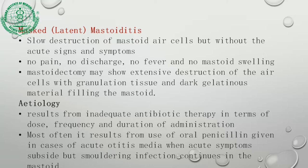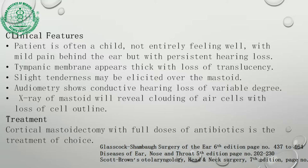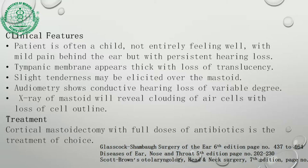Masked or latent mastoiditis is slow destruction of the mastoid cells without the acute signs and symptoms — no pain, no discharge, no fever, no mastoid swelling. Etiology: results from inadequate antibiotic therapy in terms of dose, frequency, and duration — most often from oral penicillin in acute otitis media where acute symptoms subside but infection continues. Clinical features: child not entirely well, mild pain behind the ear, some hearing loss, thickened tympanic membrane with loss of translucency, slight mastoid tenderness, and conductive hearing loss on audiometry. X-ray mastoid shows clouding. Treatment: cortical mastoidectomy with full doses of antibiotics.